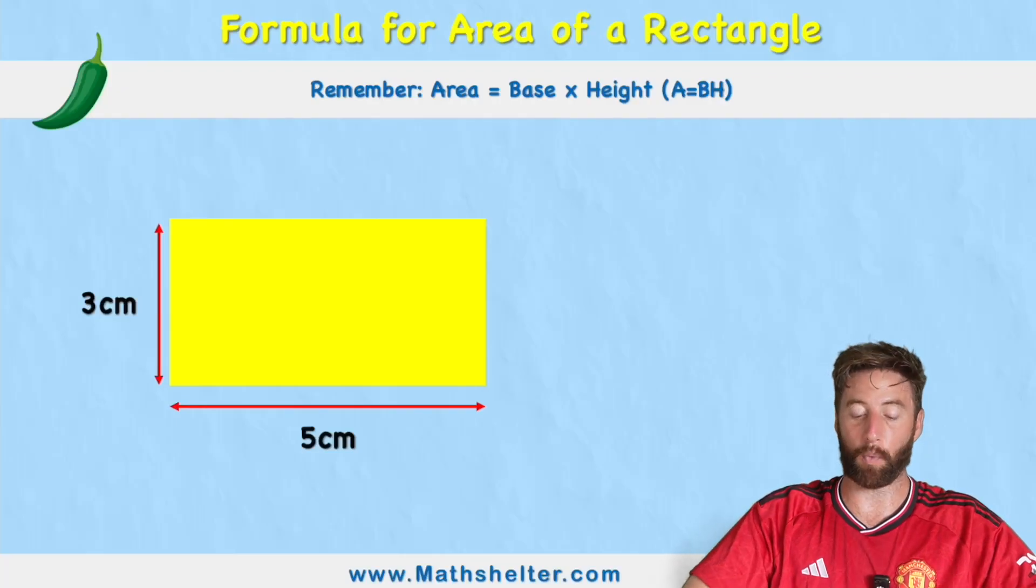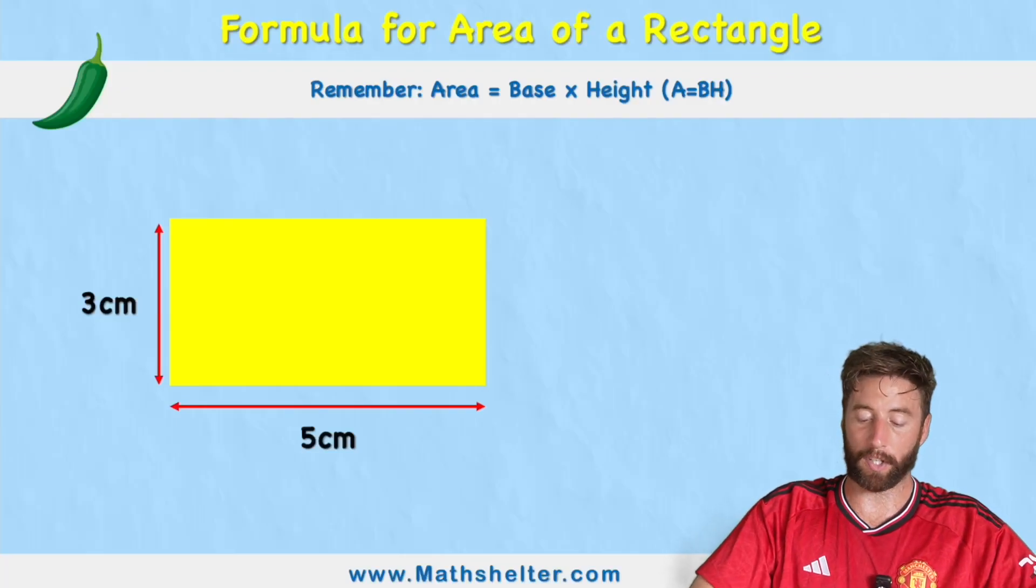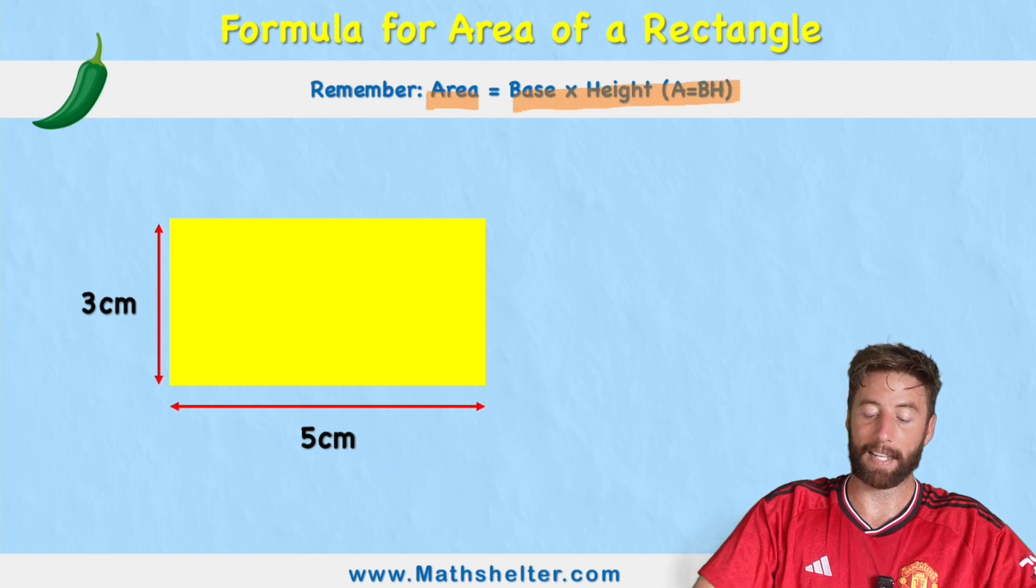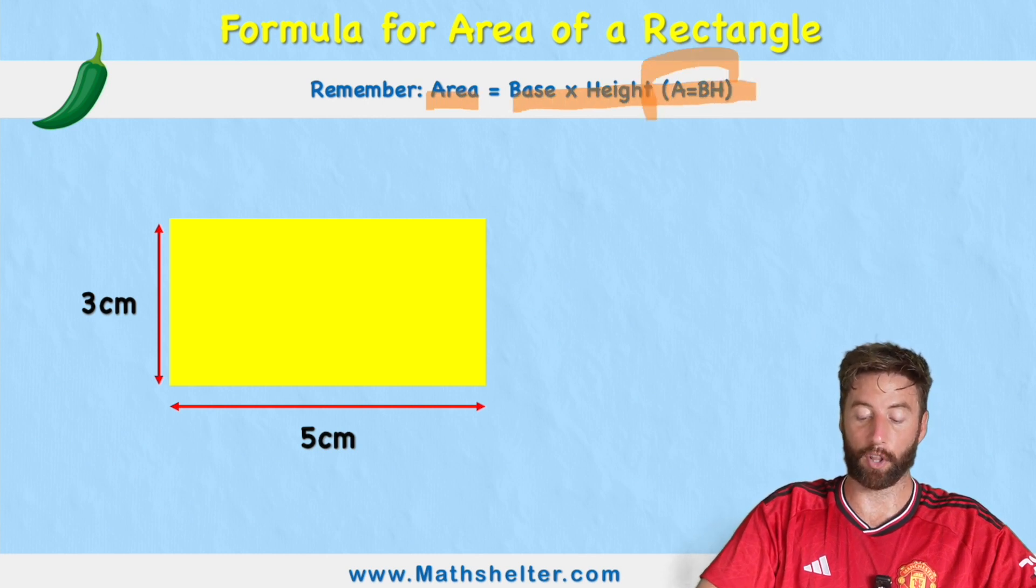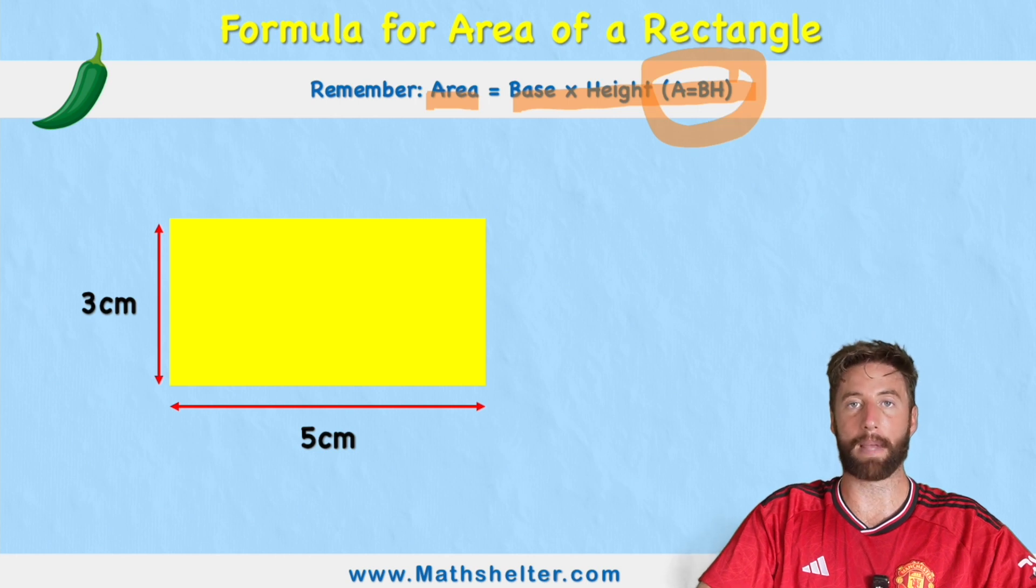Okay, so what are we going to remember today? We need to remember the formula, which is the area of a rectangle equals base times height. Or in other words, A equals BH, area equals base times height.